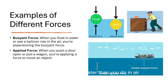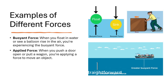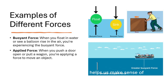Buoyant force: you float better in water than in air because of the buoyant force — like an invisible hand pushing up on you. The more water you push aside, the stronger the force pushing you up, which is why big, heavy ships can float. Applied force: any time you push or pull something, you are applying a force. It's what gets things moving or stops them. Understanding these forces helps us make sense of why things move the way they do in our everyday lives — they are like the rules that govern how everything interacts.